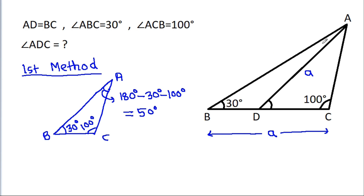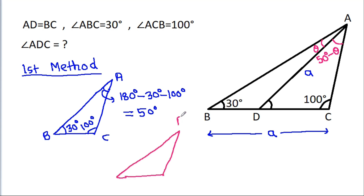So if angle ADB is theta, then angle ADC will be 50 degrees minus theta. And now in triangle ADC, angle ACB is 100 degrees and this angle is 50 degrees minus theta.